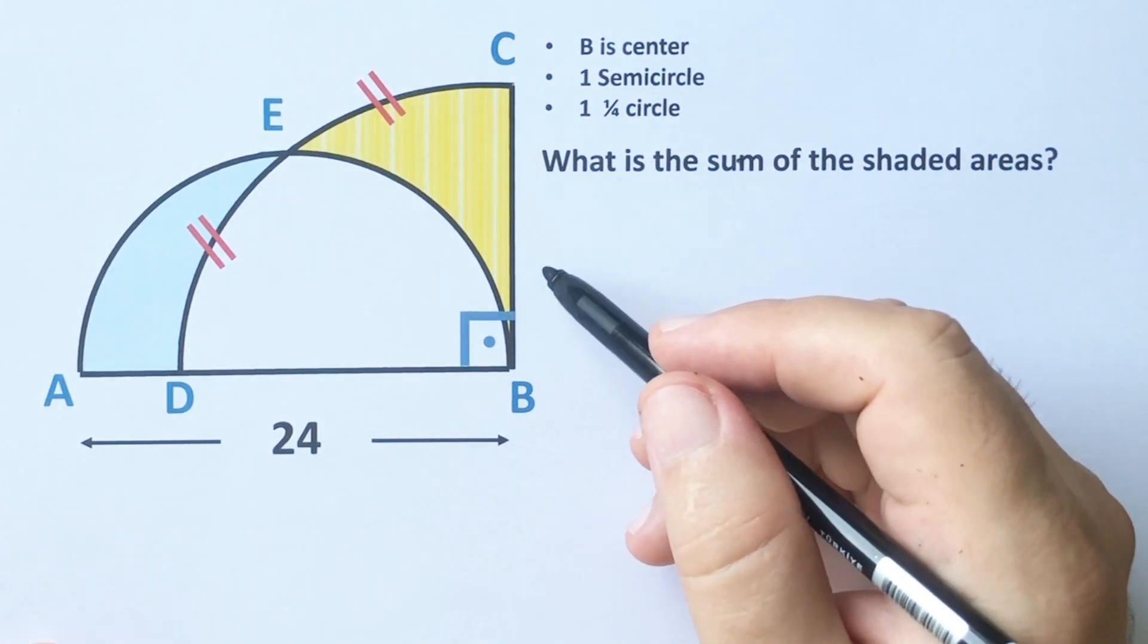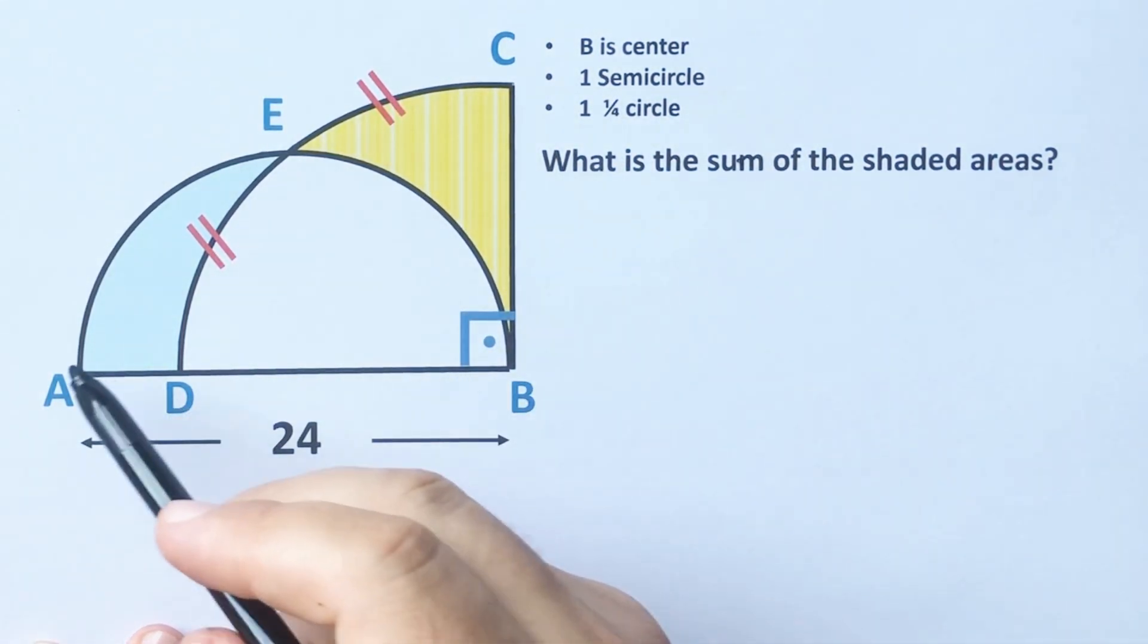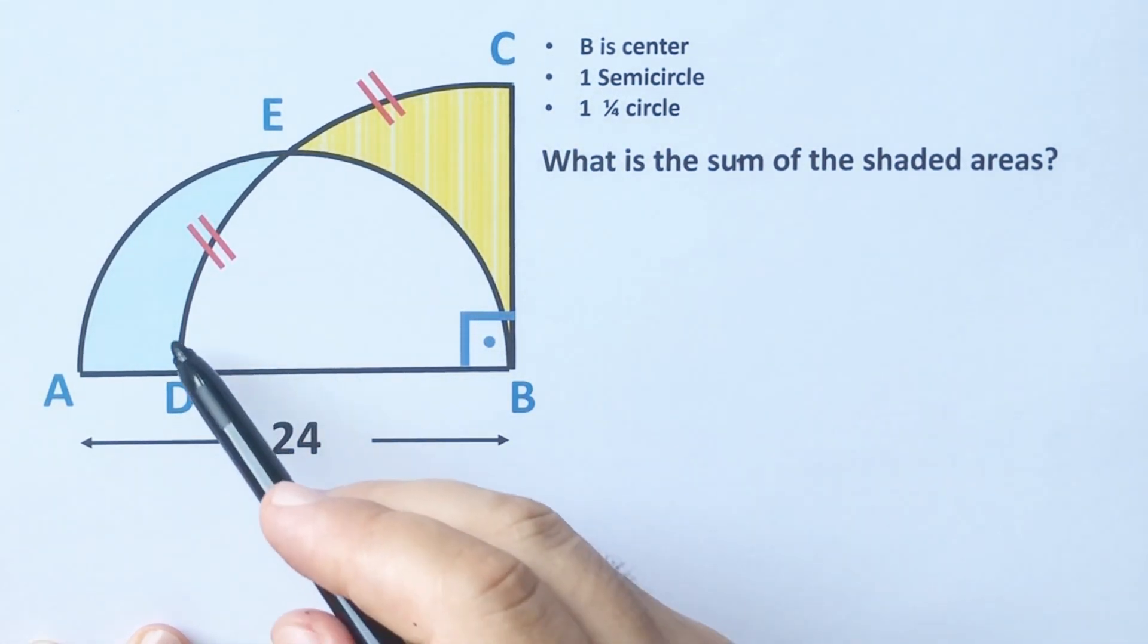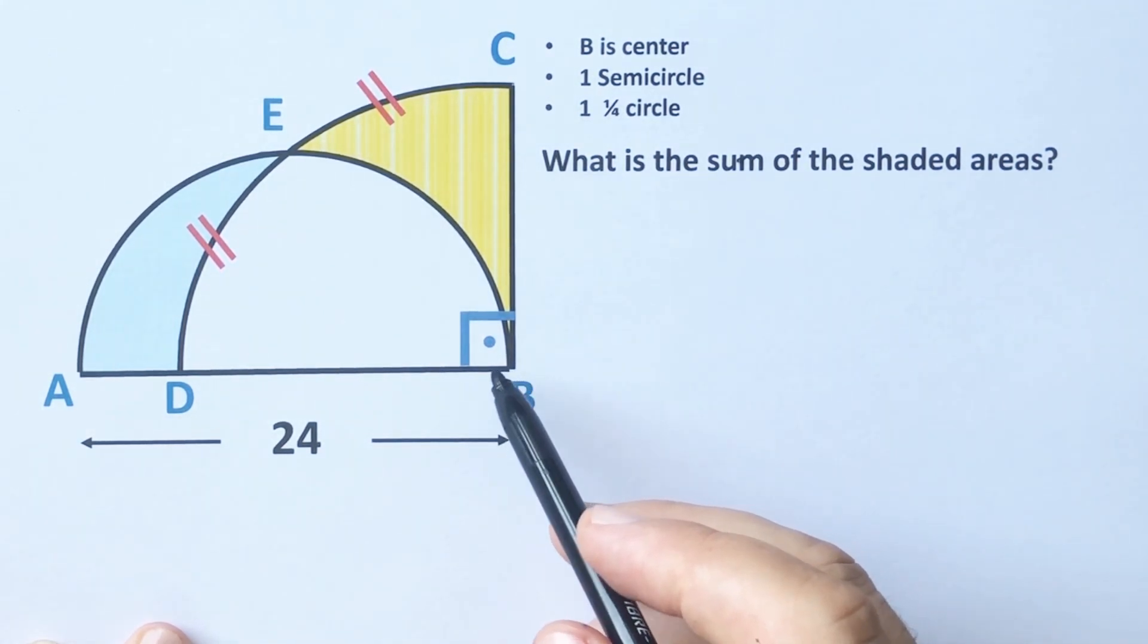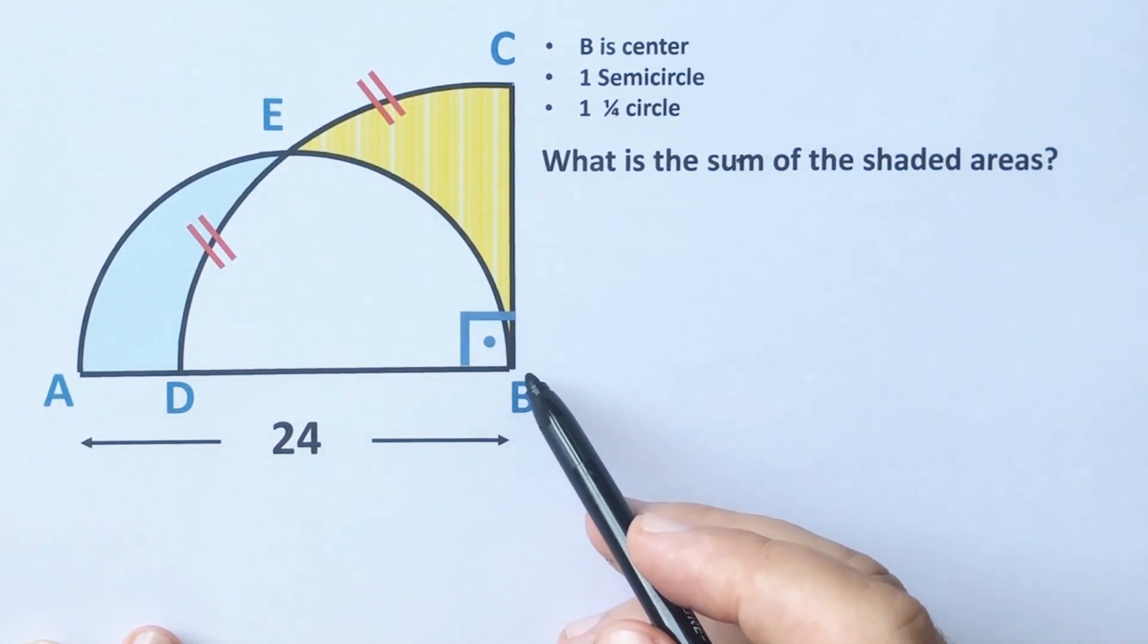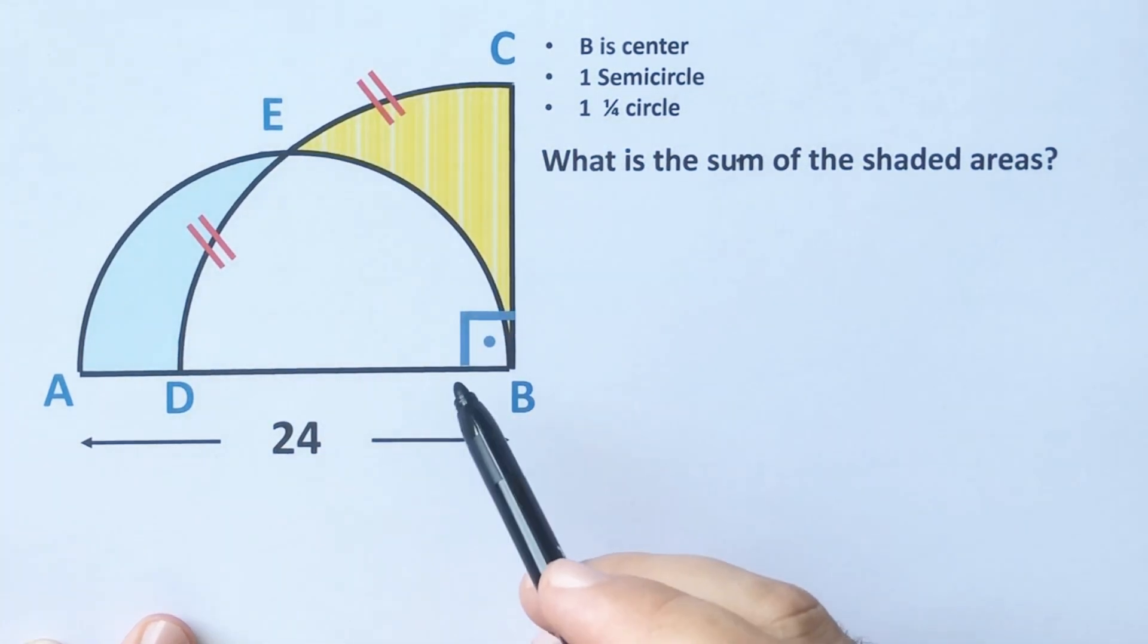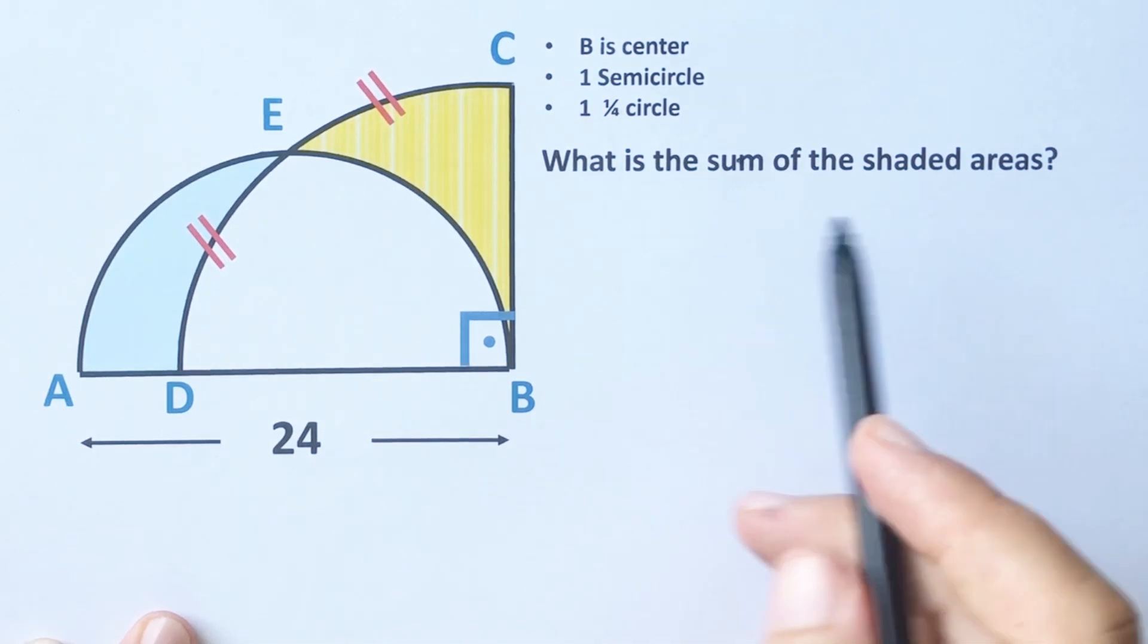Hello everyone, in this video we have one semicircle and one quarter circle. E is the center of the quarter circle, and then these two arcs are equal. The diameter of the semicircle equals 24 units, and the sum of the shaded areas is asked.